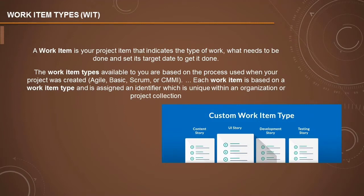Work item types help an organization understand how a particular project will be simplified and distributed among the development team. The work item types available to you are based on the processes used when your project was created. This is a very important understanding: work item types may vary depending on the framework, methodology, or even the organization you are working in. Each work item is based on a work item type and is assigned a unique identifier within an organization or project collection.